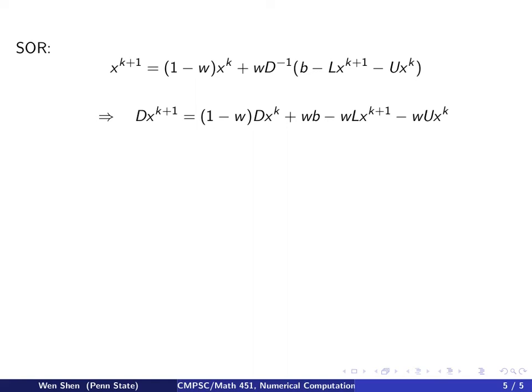I have Dx^(k+1) equals (1 - w) times D. And if I multiply by D, it cancels the D^(-1), so I just get w outside. I'm going to distribute the w on each term, so I get wb, wLx^(k+1), and wUx^k. Now I will move the term with k+1 to the left-hand side. Then I combine them and take out the common factor. So I get (D + wL).